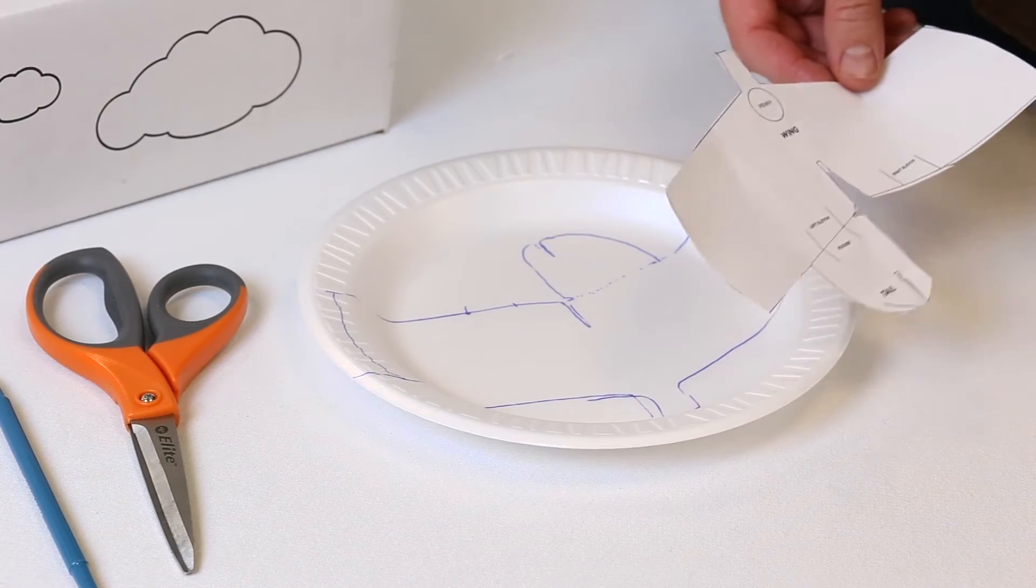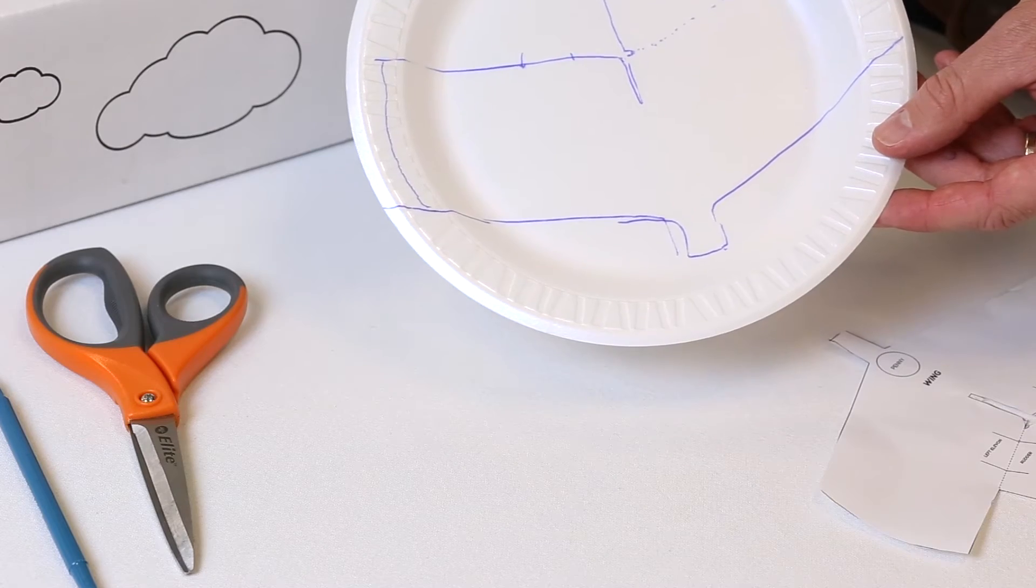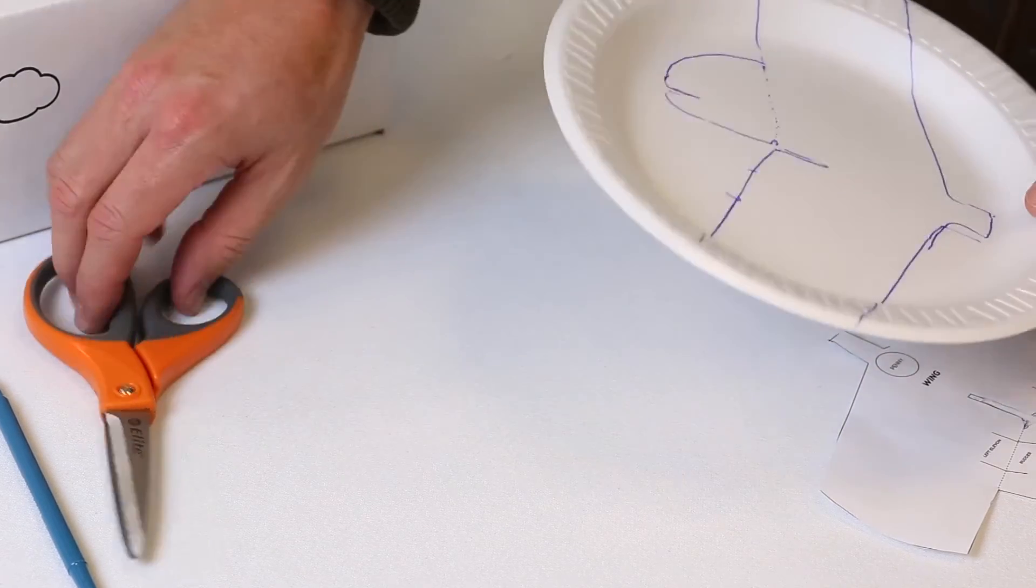Well, I never said I was an artist, but once you have your trace set, cut out the FPG9 from the foam plate by following the pen lines you just traced.